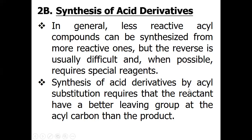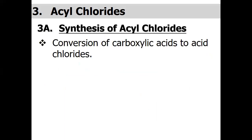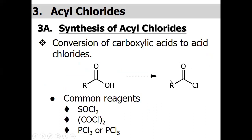The synthesis of acid derivatives by acyl substitution requires that the reactant have a better leaving group at the acyl carbon than the product. Here we have some synthetic routes for how we can synthesize acyl chloride. Since carboxylic acid is less reactive and acyl chloride is more reactive, common reagents used include SOCl2, oxalyl fluoride, phosphorus trichloride, or phosphorus pentachloride.